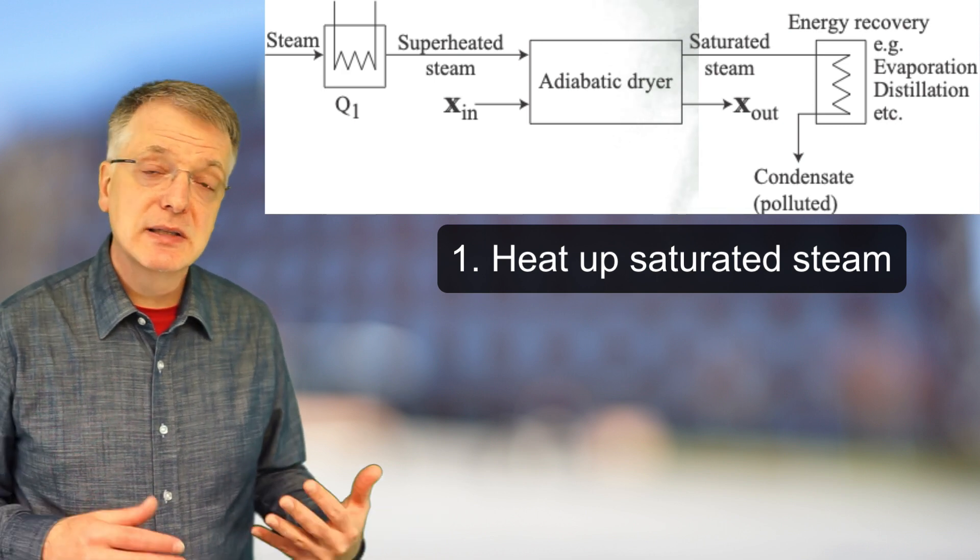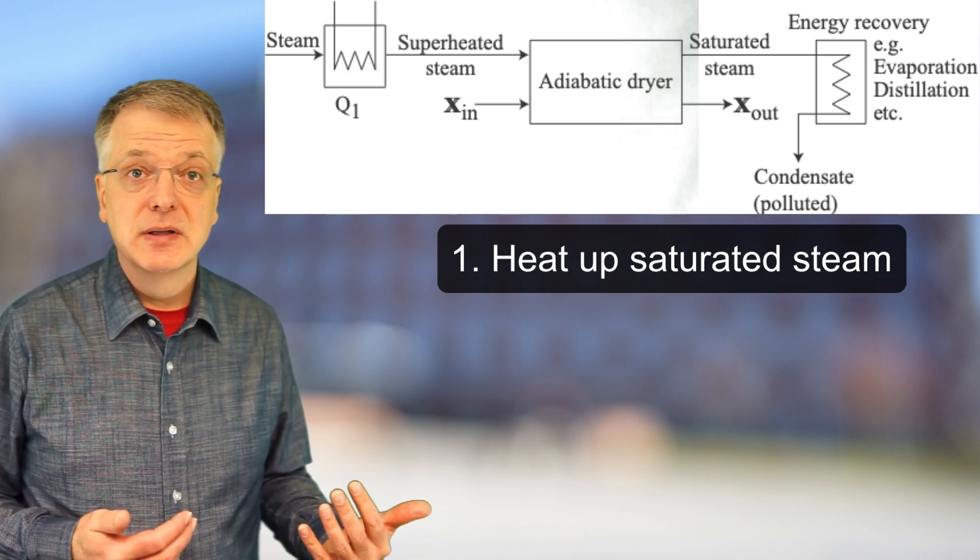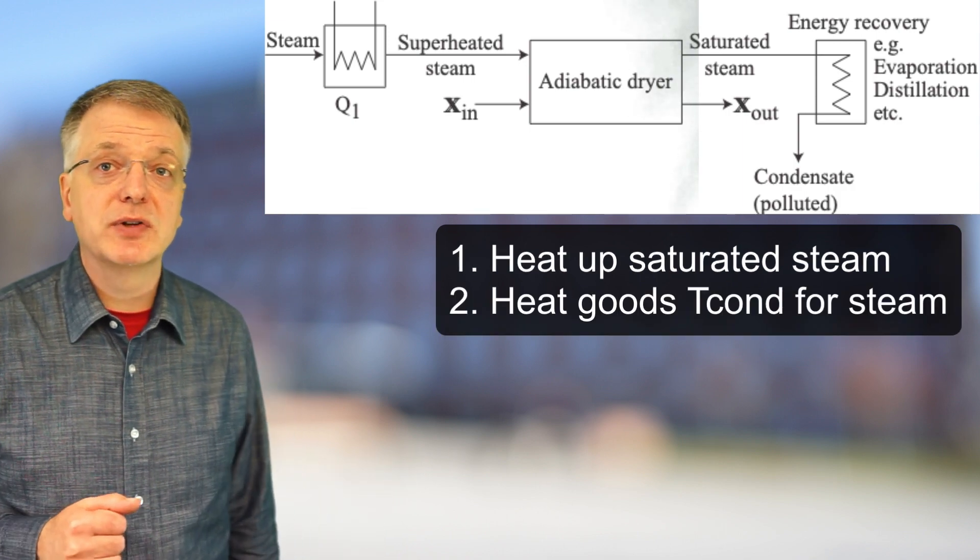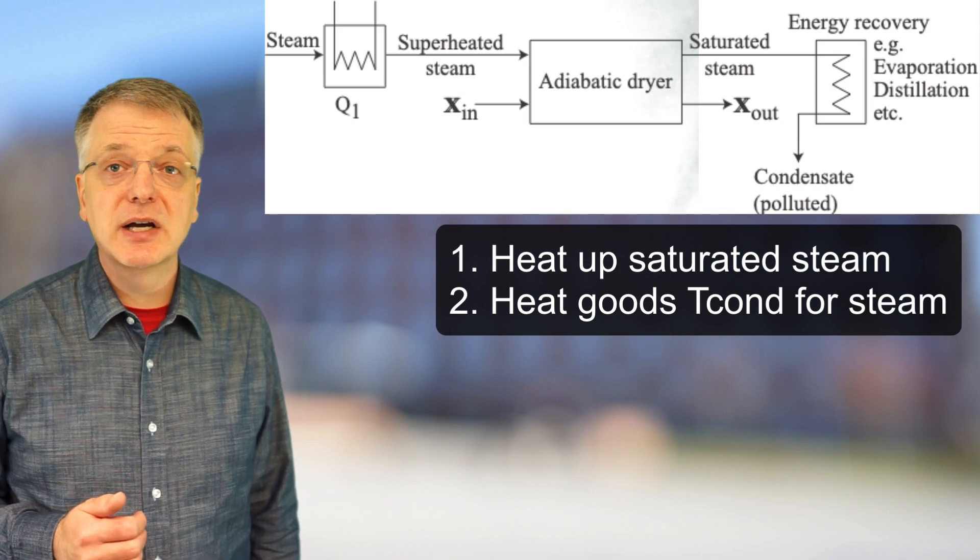The superheated steam is then led into an adiabatic dryer. The drying goods should be preheated to the condensation temperature of the steam before being led into the adiabatic dryer.